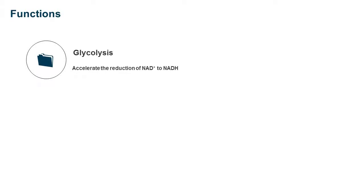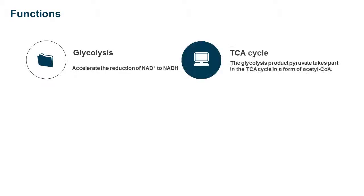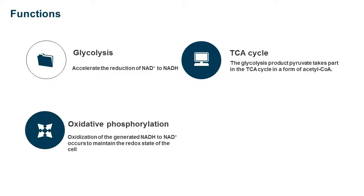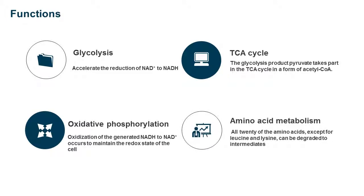In glycolysis, oxidoreductases accelerate the reduction of NAD+ to NADH. In the TCA cycle, glycolysis product pyruvate is oxidized in the form of acetyl-CoA. In oxidative phosphorylation, oxidation of the generated NADH to NAD+ occurs to maintain the redox state of the cell. In amino acid metabolism, all 20 amino acids, except for leucine and lysine, can be degraded to intermediates.